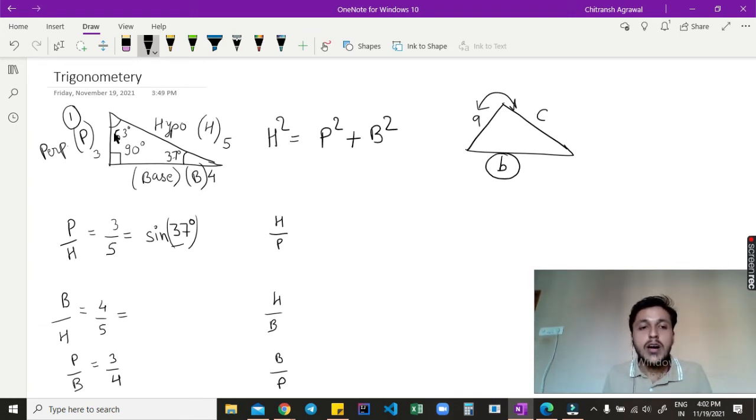Similarly, this B upon H ratio is called cos of 37 degrees, and this P upon B ratio is tan of 37 degrees. This H upon P ratio is called cosec of 37, this is called sec of 37 degrees, and this is called cot of 37 degrees.